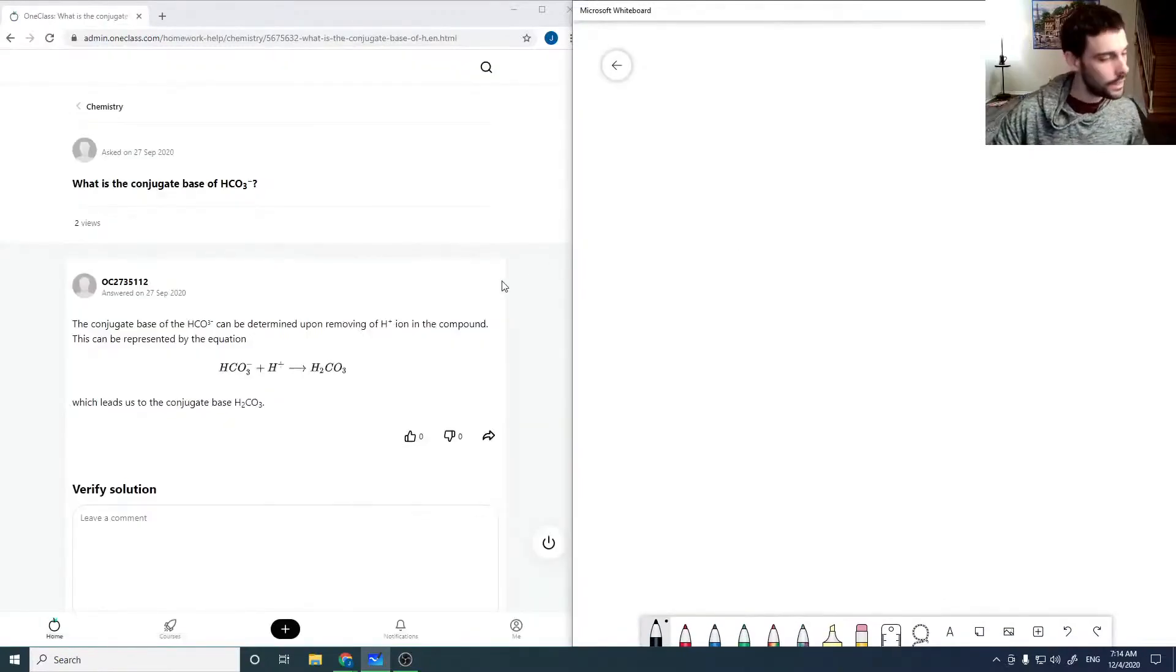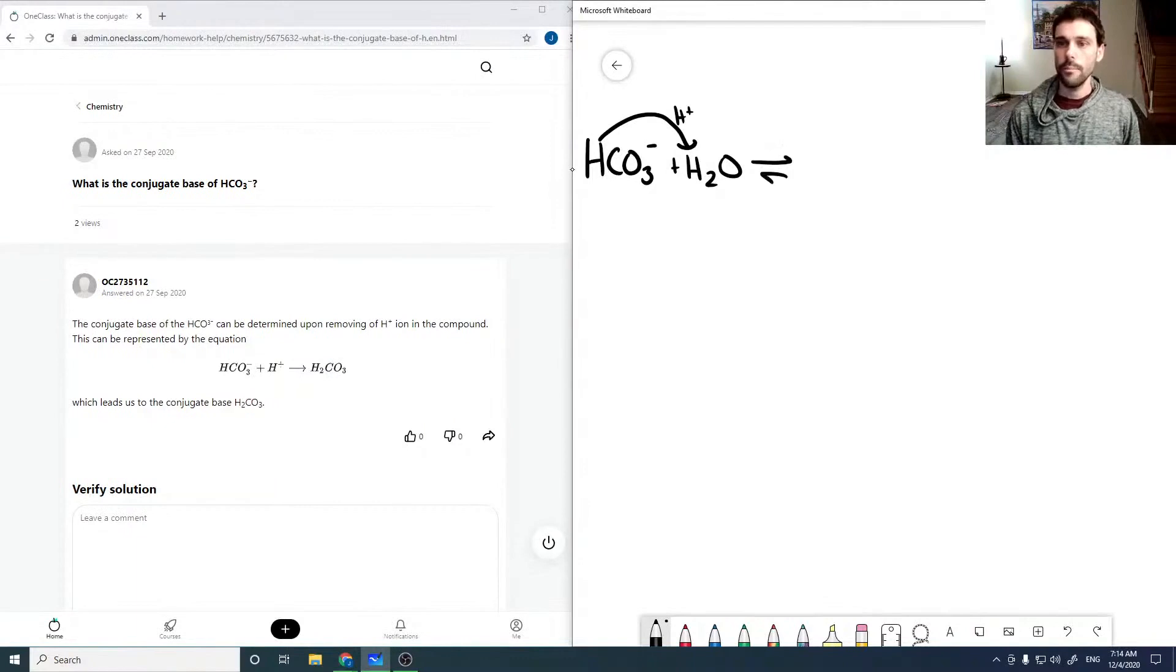Okay, what is the conjugate base of HCO3-? So if we're looking for a conjugate base, we're going to do our acid reaction. We're transferring a hydrogen and we're getting CO3 2- plus H3O+.